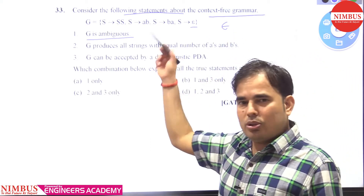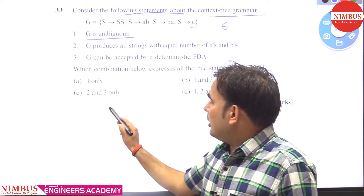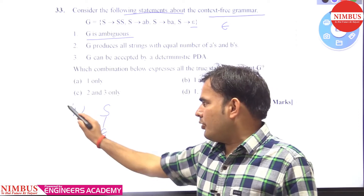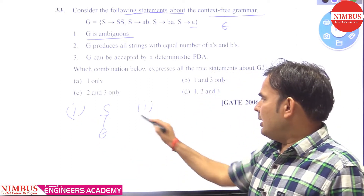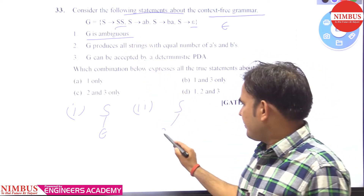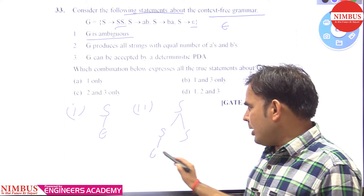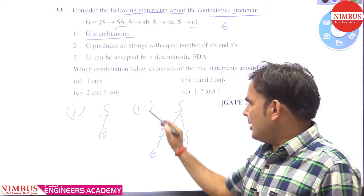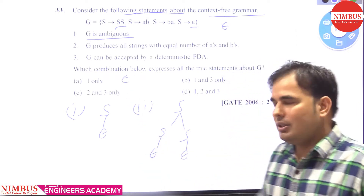S directly gives you epsilon — this is your first parse tree. The second parse tree: you can replace S with SS, and this S gives you epsilon, and this S also gives you epsilon. So this is the second parse tree for the string epsilon.